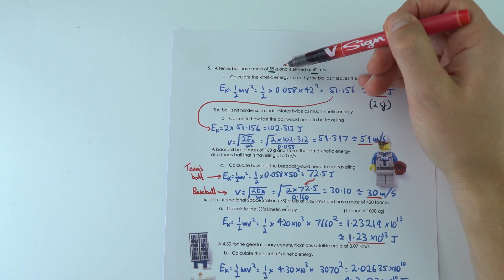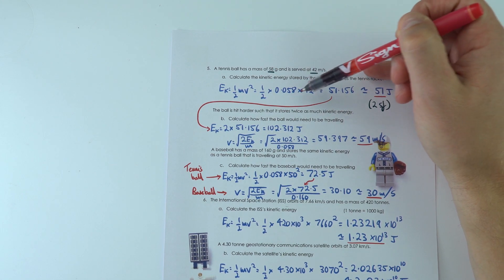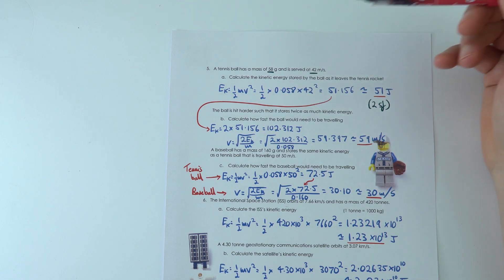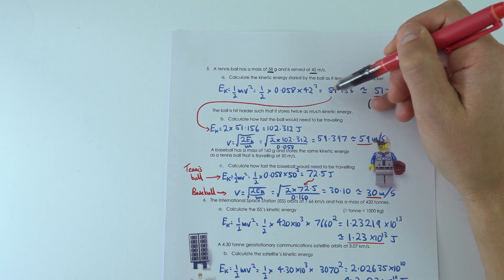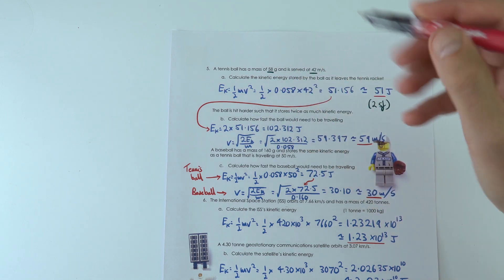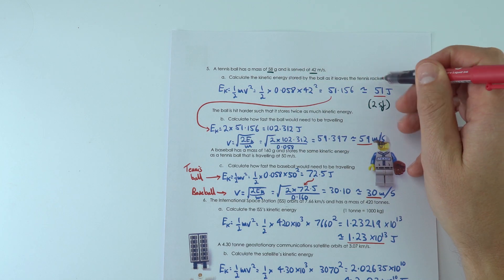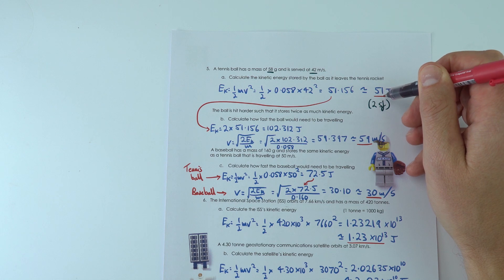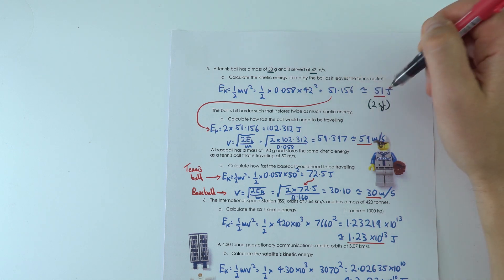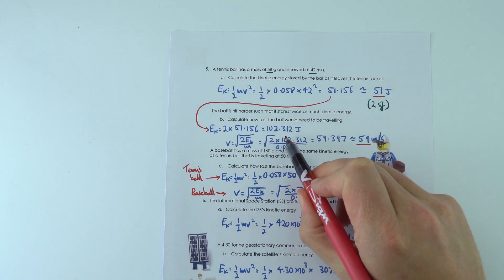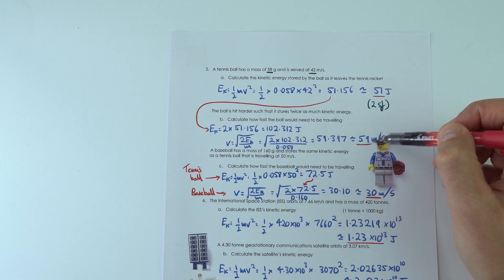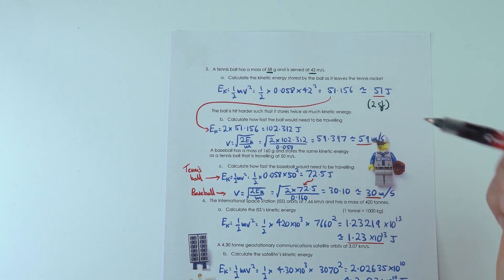On the other side, we looked at a question to do with a tennis ball. The first one, you've got to remember to convert from grams into kilograms because we always use kilograms for our mass. This gave me a value of 51 joules. But for the next question, I used my value of 51.156 in my next calculation. So although this might be my appropriate rounded-down answer to two significant figures like the raw data in the question, I still use my calculated value for subsequent calculations, and this gave a value of 59 meters per second.